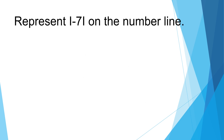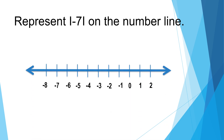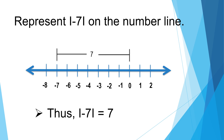Represent the absolute value of negative seven on the number line. What is the distance of negative seven from zero? Let's count how many units: one, two, three, four, five, six, seven — seven units. Thus, the absolute value of negative seven is equal to seven.